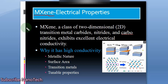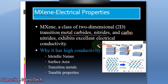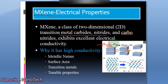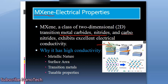MXenes are a class of two-dimensional transition metal carbides or nitrides. The parent phase of MXene is the MAX phase. In MAX, M represents the transition metals, A is a metal from group 13 to 16 elements, and X represents either carbon or nitrogen. If it is a carbide-based MXene, X would be carbon, and if it is nitride-based, X would be nitrogen.